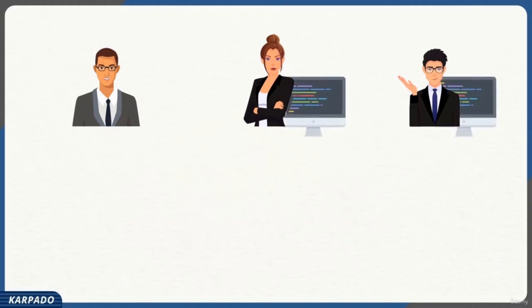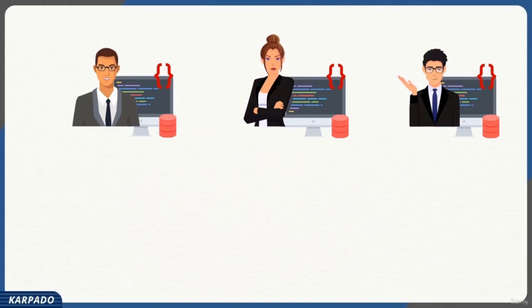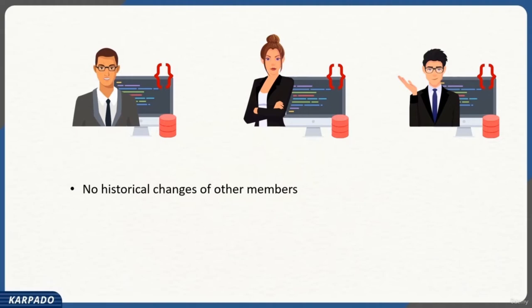Sundar hired two new team members: Isha and Luke. He provided them with MacBooks, shared the project files — either directly or via an FTP server — and instructed them to install a VCS software on their local computers. As they made progress, Sundar started to notice a few problems with using a local version control system. One problem: no access to historical changes of other members. For example, if Isha wants to see historical changes of file A, she can only see her own history — not Sundar's — because she only has access to her own data store.